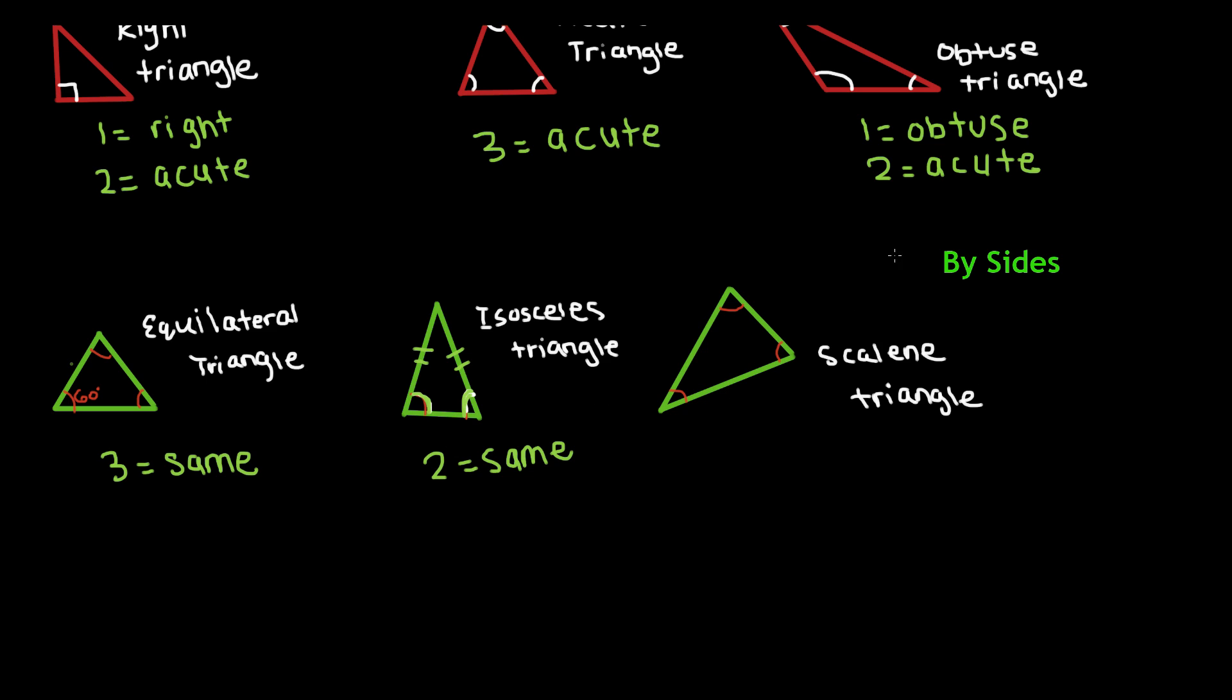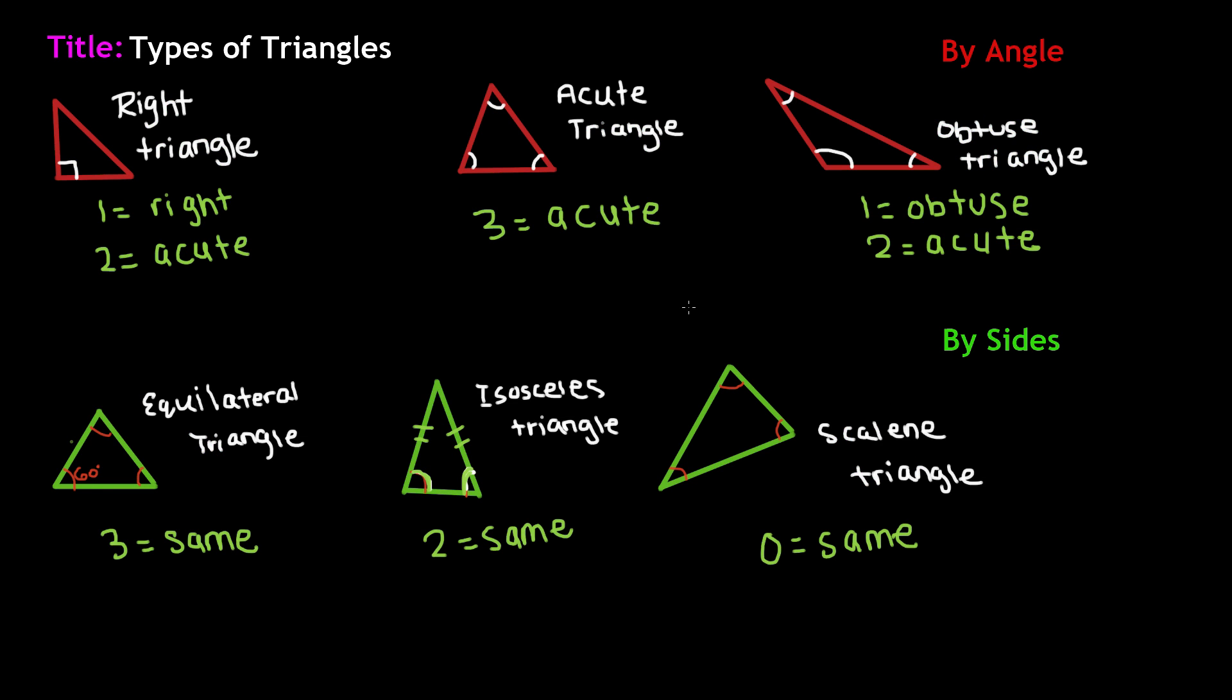And then the last type of triangle out of the six basic triangles is the scalene triangle. A scalene triangle has no same sides, so it has zero same sides. That means all the sides are of different measurement. Now in a scalene triangle, there are different possibilities. Looking at it from angles, it could have one right angle and two acute angles, or it could have all three acute angles, or it could have one obtuse angle and two acute angles. So it really depends. You can really make different combinations of triangles using these six basic triangles.